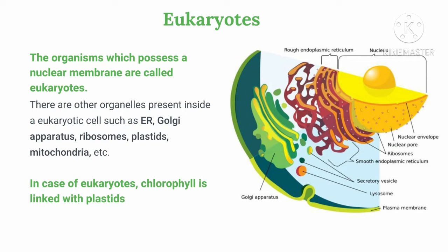Organisms which possess a nuclear membrane are called eukaryotes; those which lack it are prokaryotes. Besides the nuclear membrane, other organelles present in eukaryotes are endoplasmic reticulum, golgi apparatus, ribosomes, plastids, and mitochondria. In case of eukaryotes, the plastids hold the chlorophyll. There are many types, and one known as chromoplast contains chlorophyll. This is an enlarged zoom view of a eukaryotic cell with many structures visible.